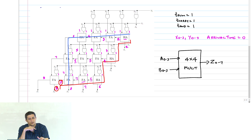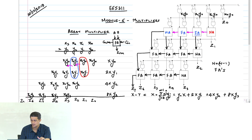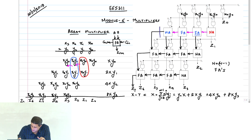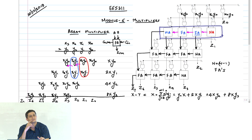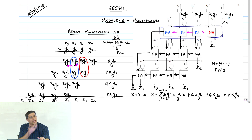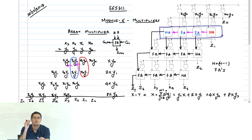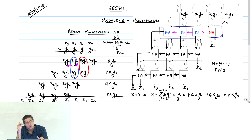You also notice that if you take a single stage here, it is basically like a ripple adder — you are rippling the carry through that stage. Each row ripples the carry through that stage, and that is really not helping.